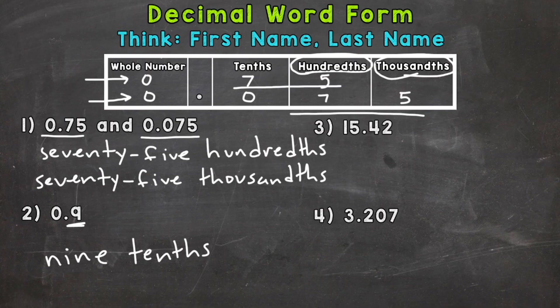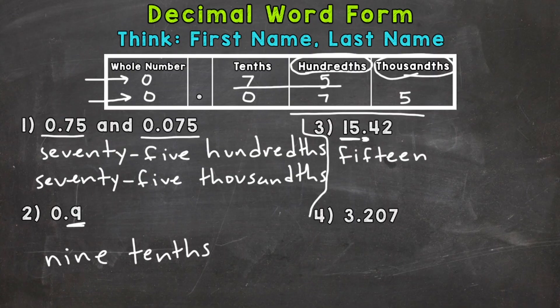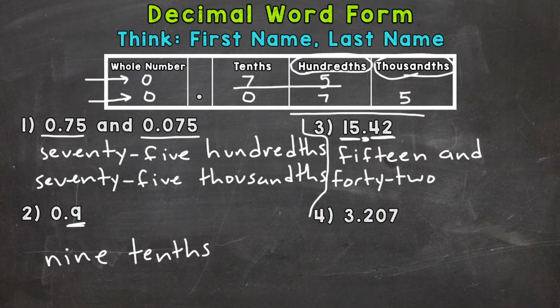For numbers three and four, we have whole numbers, so there's going to be a very important word that represents the decimal within our word form. Read the whole number as is — we have 15. When we see the decimal, we need to put the word and. So: 15 and — that separates our whole number portion from the decimal portion. Then apply first name, last name: the first name is 42, and the last name is wherever that decimal ends, which is the hundredths place. So: 15 and 42 hundredths.